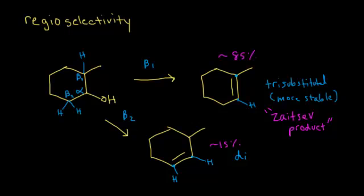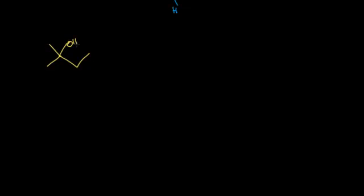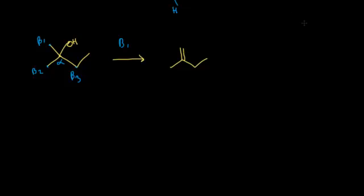Let's do another example predicting the major product using regioselectivity. Starting with an alcohol reacting with sulfuric acid and heat, we identify our alpha carbon — the one bonded to the OH. There are three beta carbons: beta 1, beta 2, and beta 3. Let's draw all three possibilities. For beta 1, the double bond forms between the alpha and beta 1 carbon when the OH leaves as water.